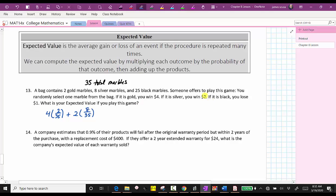And then finally, the last outcome is you lose $1. So we have plus negative one, because it's a loss of $1, times the probability of losing $1, which is the probability of selecting a black marble. There are 25 black marbles out of 35, giving us 25 divided by 35, as the probability of selecting a black marble.